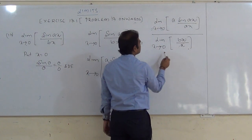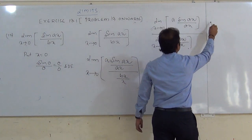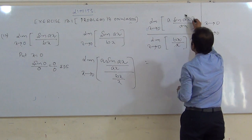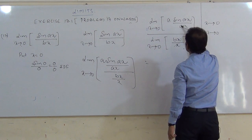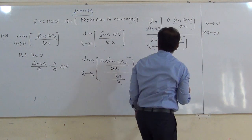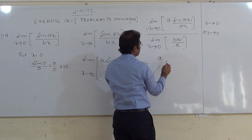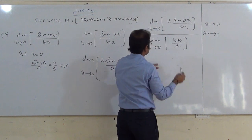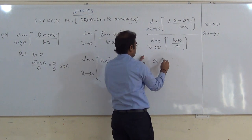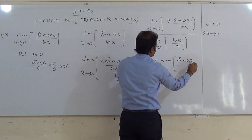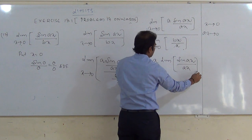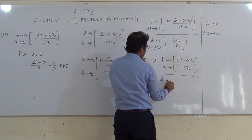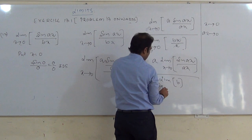Now apply the limit to the numerator as well as the denominator. Therefore it is: limit of A · sin(Ax)/(Ax) as x tends to 0, divided by limit of Bx/x as x tends to 0. Here x/x cancels. Since Ax also tends to 0 when x tends to 0, this is of the form sin θ / θ as θ tends to 0.